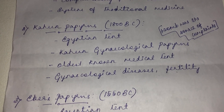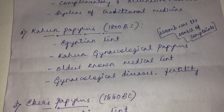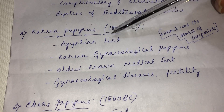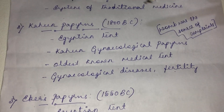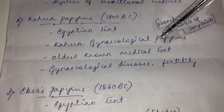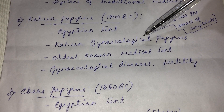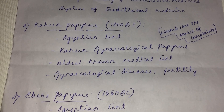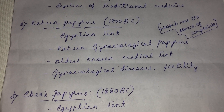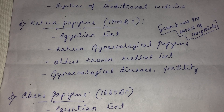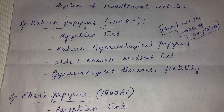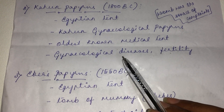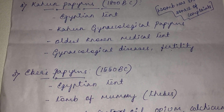During 1800 BC, the famous Egyptian text named the Kahun Papyrus was written and later discovered. It is also called the Kahun Gynecological Papyrus because it mainly deals with gynecological problems — the main source of the majority of complaints affecting the body. It is one of the oldest known medical texts, consisting of documentation of gynecological diseases, fertility-related problems, and remedies for these conditions.